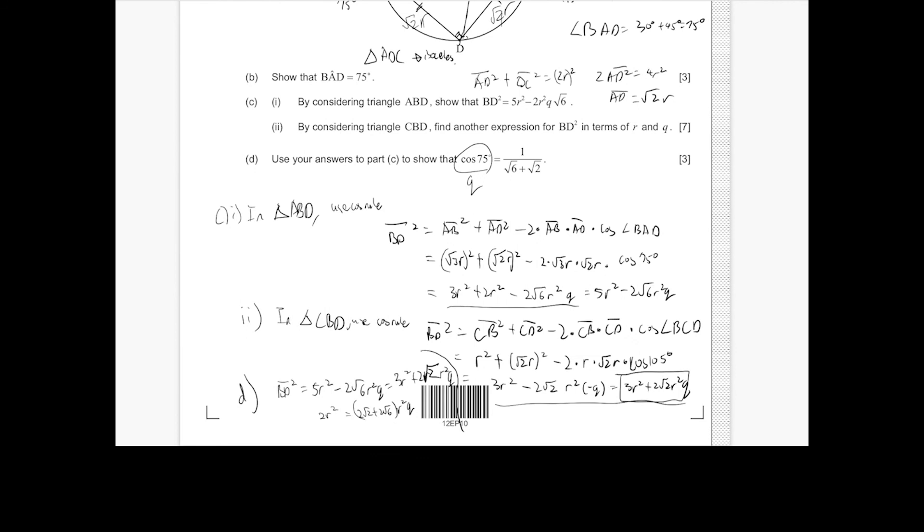We simplify by dividing 2R squared on both sides. So we have 1 over root 2 plus root 6 equals Q. So Q is going to be 1 over root 2 plus root 6, or hence cos 75 degrees is 1 over root 2 plus root 6.